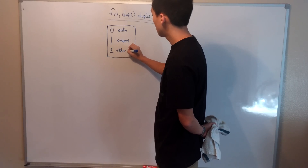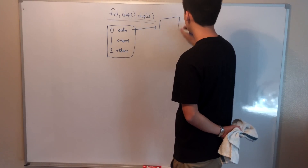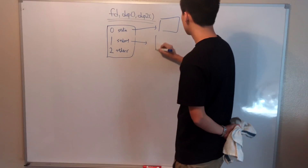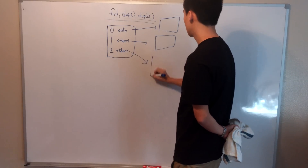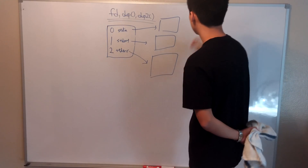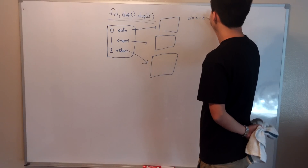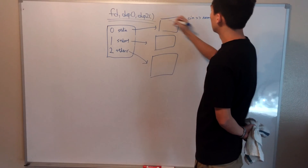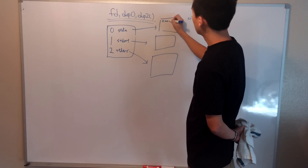That means standard in, standard out, and standard error are each actually a file. The standard in file descriptor is a file that the system reads from. Let's say you use the common command cin name, where name is some variable we have. When the user types in the string, the system writes the string to the standard in file.